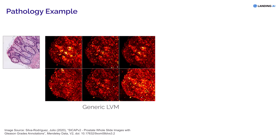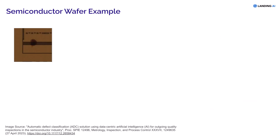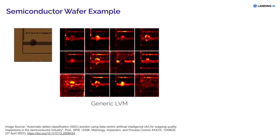Here's another example, and again the domain-specific LVM does much better understanding pathology images. Here's another example from semiconductor manufacturing. A generic LVM learns features like this — notice how it's not very good at picking up the lower wire. But the domain-specific LVM, trained using unlabeled data to work specifically on semiconductor images, recognizes the most important features.